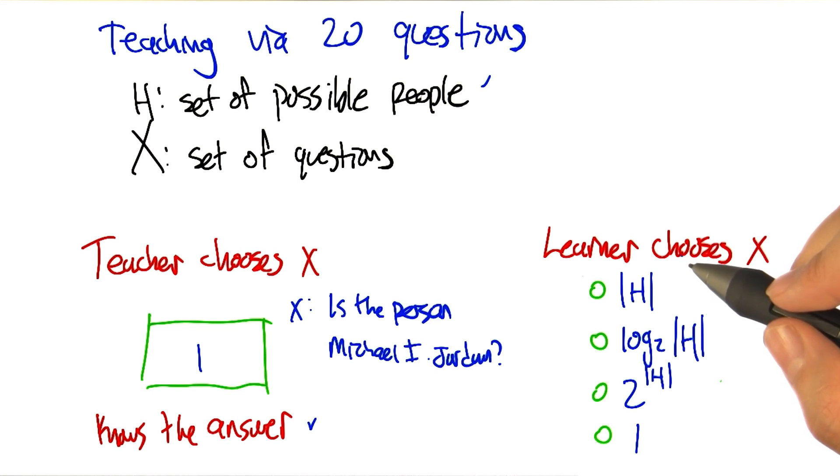So, whereas the teacher could ask questions that were maximally informative, that is to say, whittle down the hypothesis set to one in a single question, the learner doesn't have that ability.